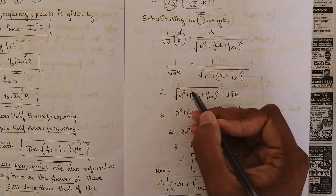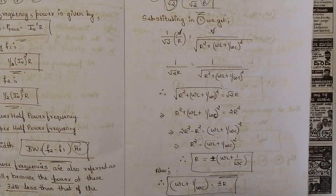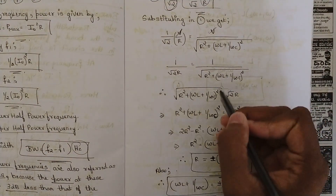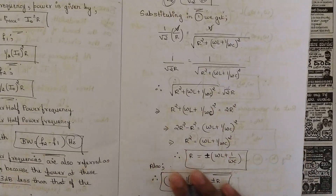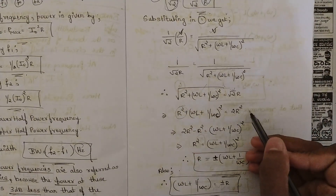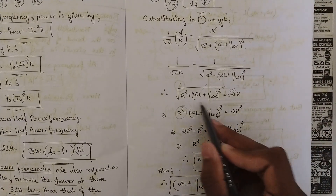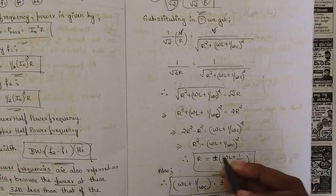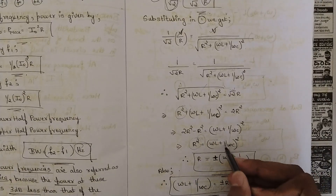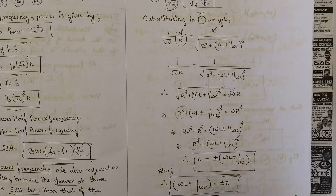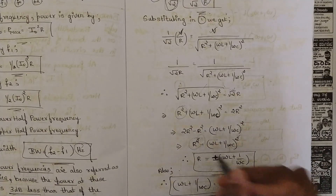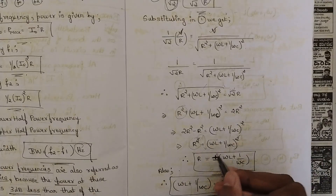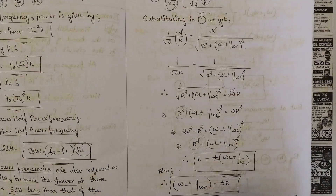In order to eliminate the square roots, I square both sides. The square roots cancel and we are left with the equation without square roots. Bringing R² to the other side: 2R² − R² = R², which equals (ωL + 1/ωC)². Applying square roots on both sides gives R = ±(ωL + 1/ωC), meaning ωL + 1/ωC = ±R.